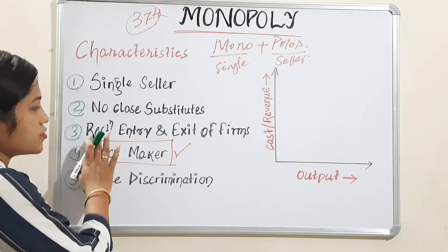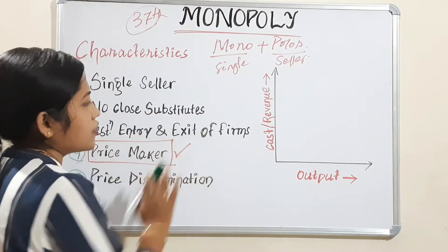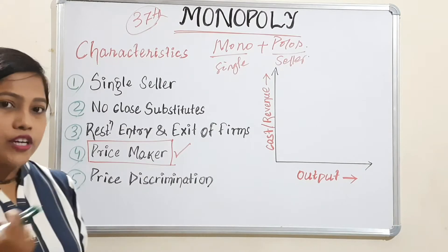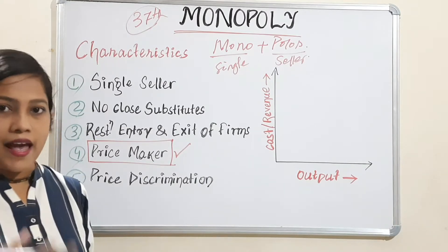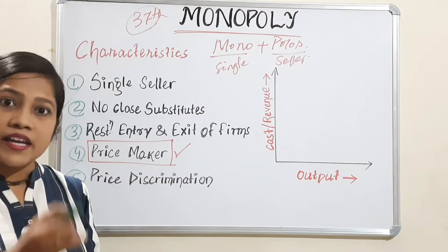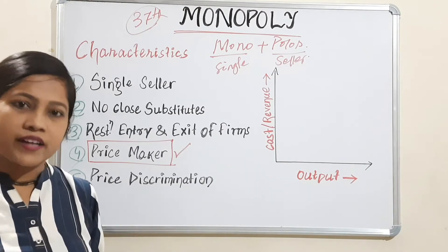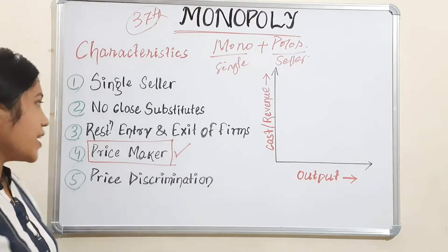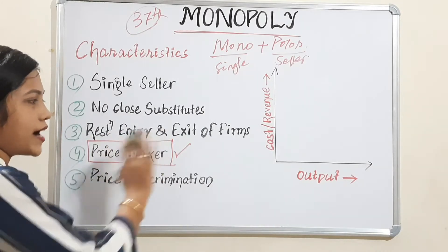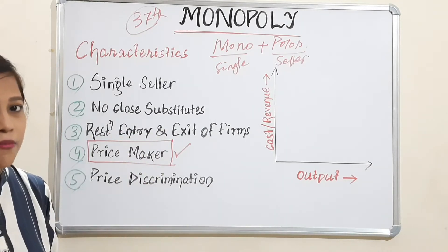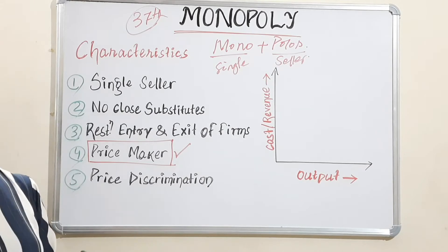Next characteristic is restriction on entry and exit of firms. We cannot randomly enter the market because they are a monopoly — a single seller. They will not allow any competitor to enter their market. In contrast, in perfect competitive market, there is free entry and exit of firms, as we have studied.